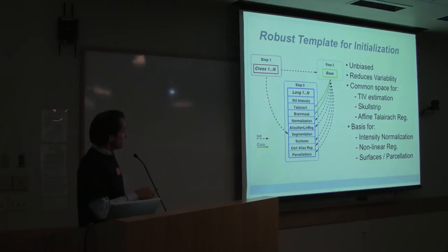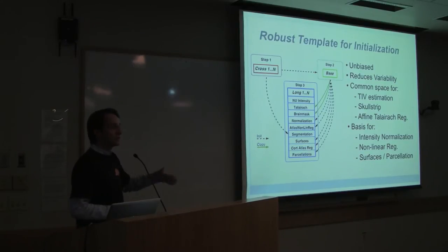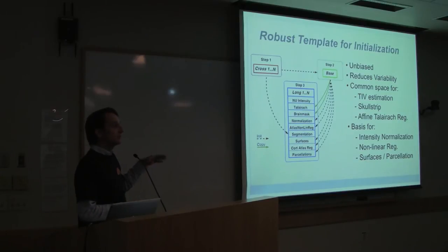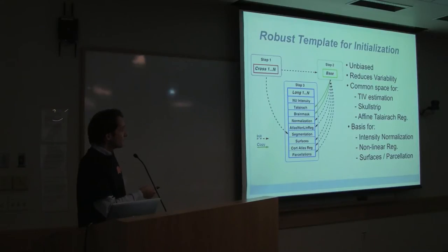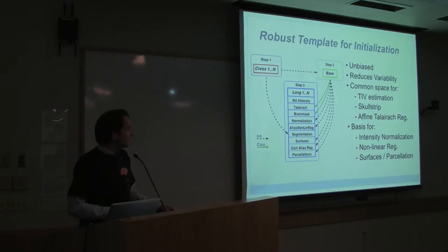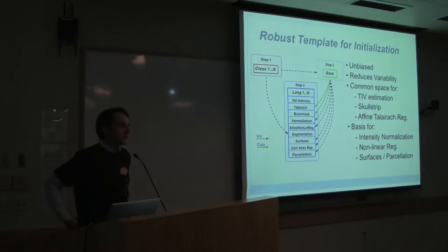The whole longitudinal stream has three steps. The first is running all N time points through FreeSurfer independently, as if they were cross-sectional data — called the cross-sectional step. The second step creates the subject template, called 'base' for historic reasons — it's the average image, not the baseline scan — and runs it through FreeSurfer. The third step runs all your time points again, this time initialized with information from the base and a little from the cross-sectionals — such as keeping the skull strip the same and using base information in many processing steps. The longitudinal run is usually much faster, around five to seven hours, compared to the regular cross-sectional runs.